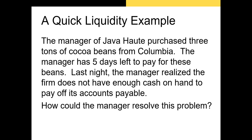The manager of Java Hote purchases three tons of cocoa beans from Colombia. The manager has five days left to pay for these beans, and last night the manager realized the firm does not have enough cash on hand to pay off its accounts payable. How could the manager resolve this problem? Java Hote could sell off some fixed assets to raise cash, though fixed assets take a fairly long time to sell, so that five-day period may not be enough. The firm could also get a loan from a bank or issue bonds to investors — a loan would be the most likely alternative — or it could run a promotion to raise cash quickly with a low profit margin.